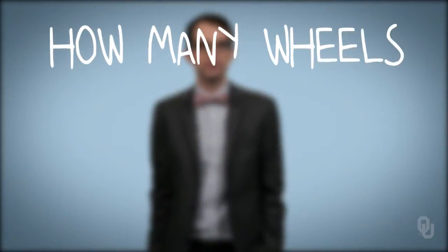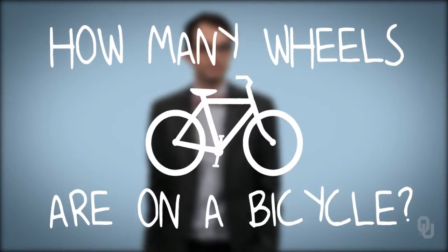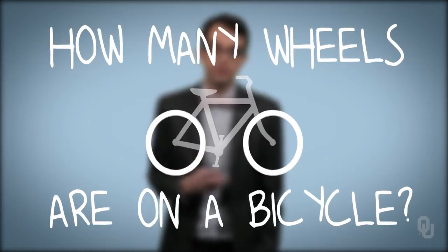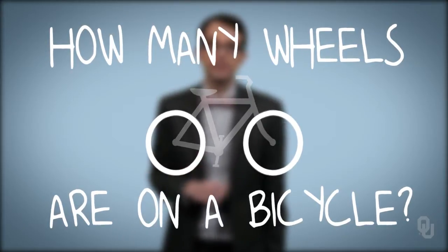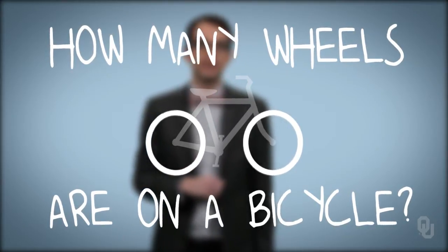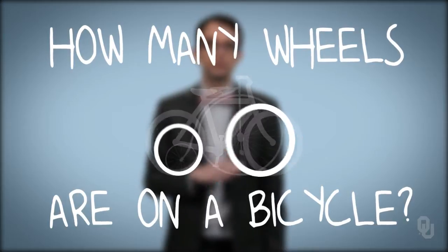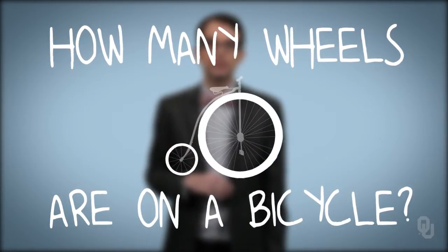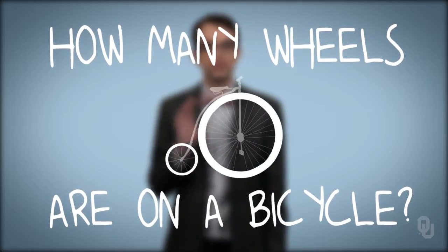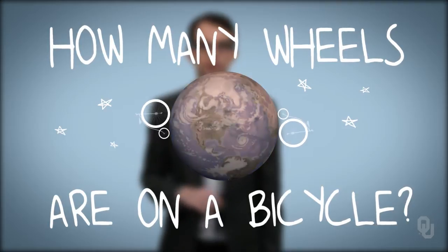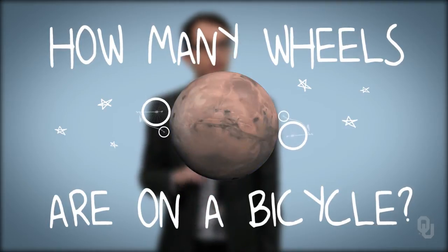Let's start out with a question. How many wheels are on a bicycle? I really hope your answer is two. There are indeed two wheels on a bicycle. The answer is two today, the same was true over a hundred years ago, the answer is true across the globe and even on Mars. There's only one answer to how many wheels are on a bicycle, and there's no uncertainty in that answer.